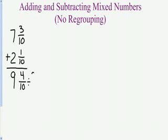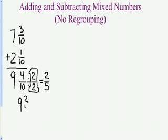I can divide them both by 2. So I divide by 2 over 2, which is 1 whole. Does not change the value of the fraction. It just changes how it looks. 4 divided by 2 is 2. 10 divided by 2 is 5. I've got to put that 9 together with my 2 fifths to get my final answer of 9 and 2 fifths.